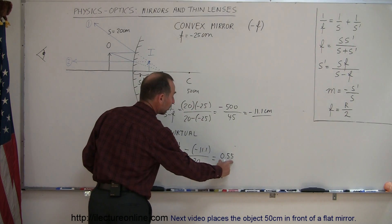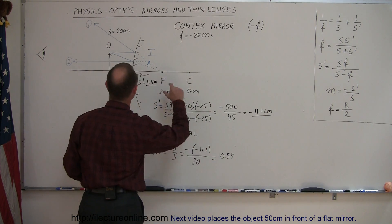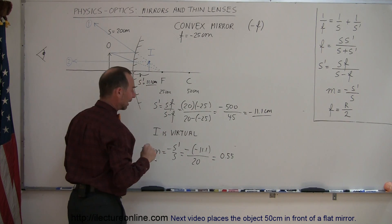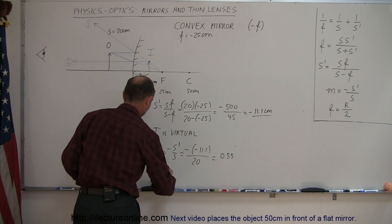Now, that means that the image will be a little bit bigger than half the size of the object. So here's the image. There's the object. And also the fact that it's positive means that the image will be upright and so we can say upright.